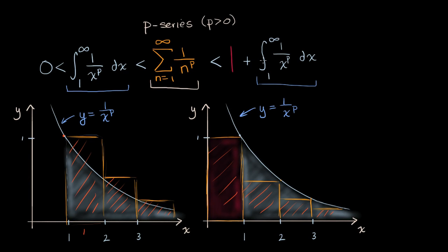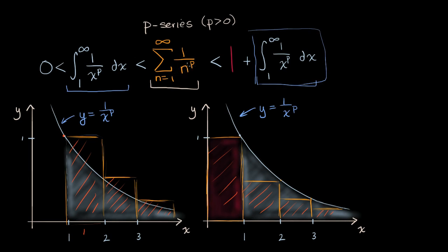All I'm talking about here is really just the integral test when we think about tests of convergence and divergence, but I'm making sure we have a nice conceptual understanding and not just blindly applying it. You could go the other way too: if the p-series converges, then for sure this integral is going to converge. And if the p-series diverges, then for sure this integral diverges. So we can say the p-series converges if and only if this integral converges.